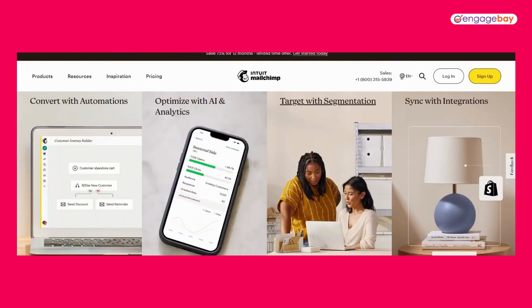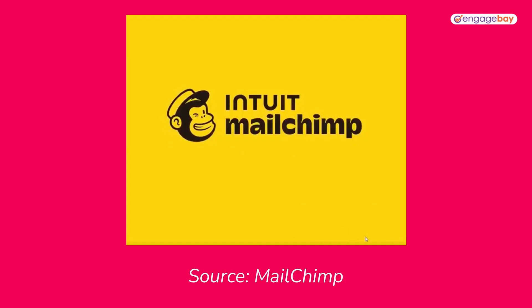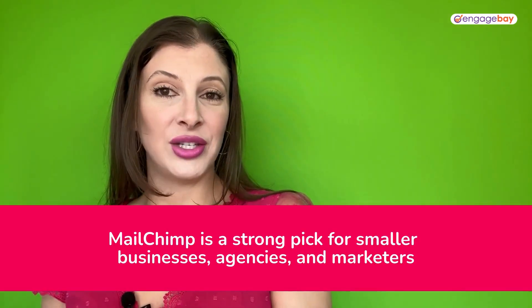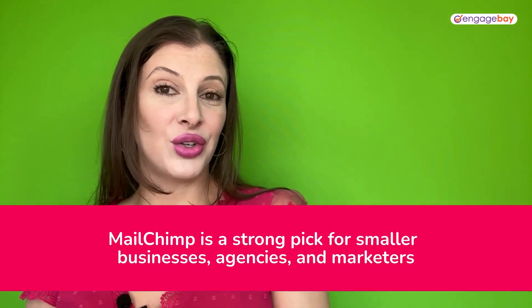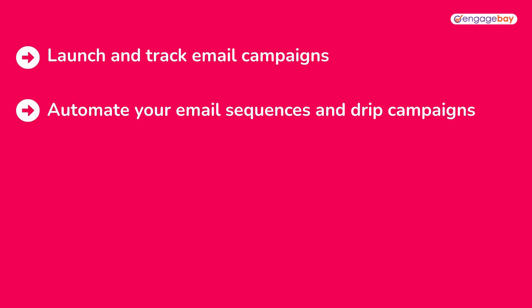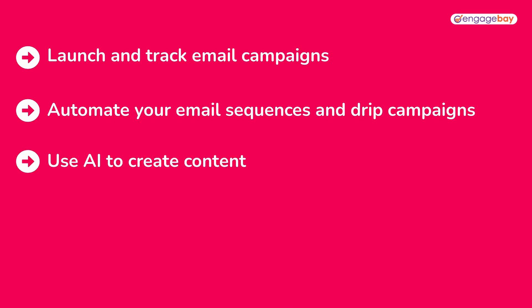MailChimp has been around for a while and it's one of the more common go-to's for email marketing simply because people are really used to hearing its name. It's a strong pick for smaller businesses, agencies, and marketers. Launch and track email campaigns that you either build from scratch or using the included templates. Automate your sequences and drip campaigns, use AI to create content, utilize its social media tools, and run ads.